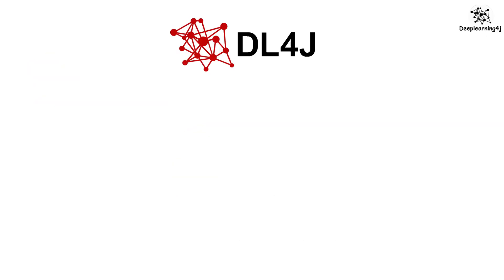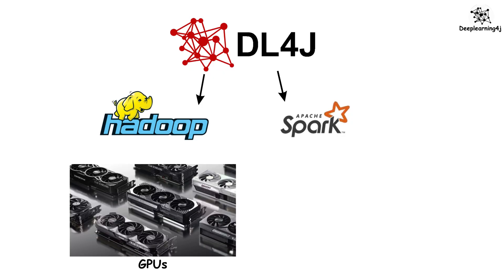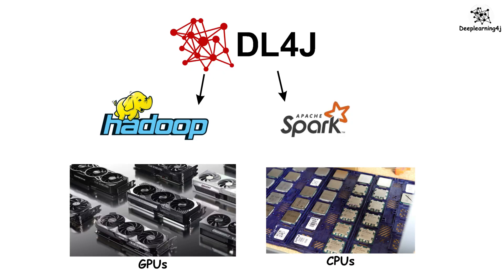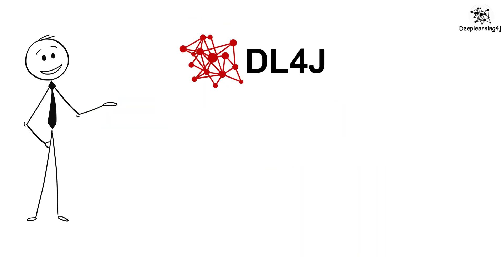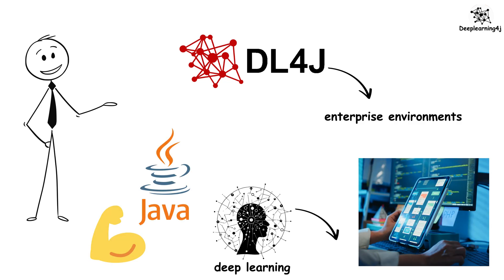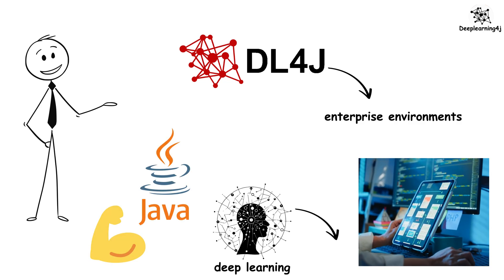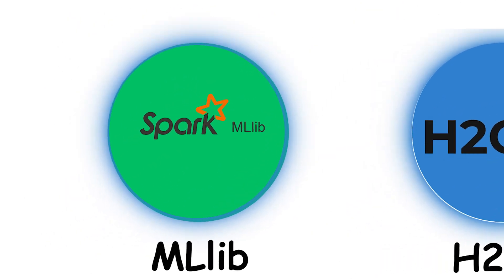DeepLearning4J integrates with Hadoop and Apache Spark and can run on distributed GPUs and CPUs. It's particularly valuable in enterprise environments where Java dominates, allowing organizations to bring deep learning to their production systems without switching programming languages.